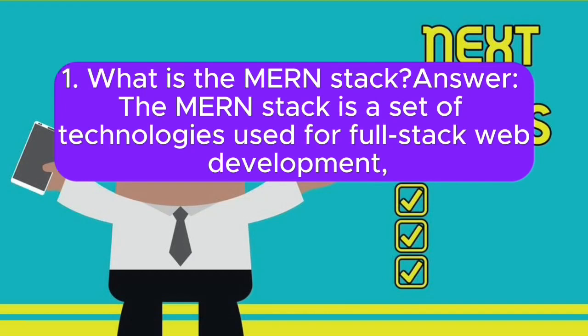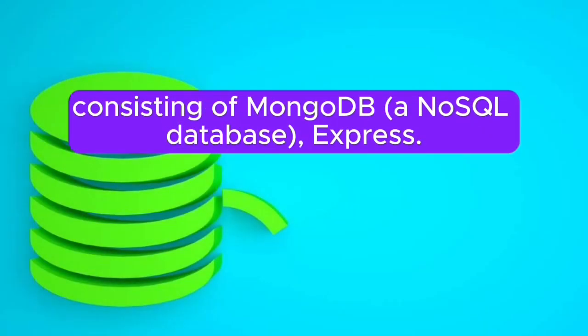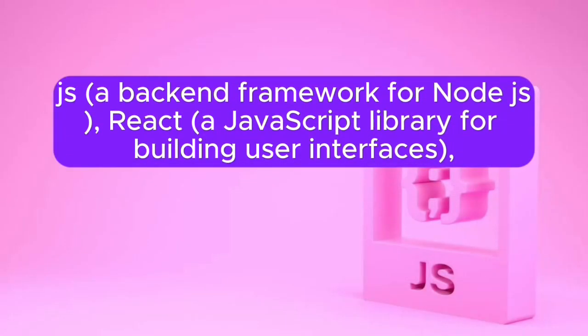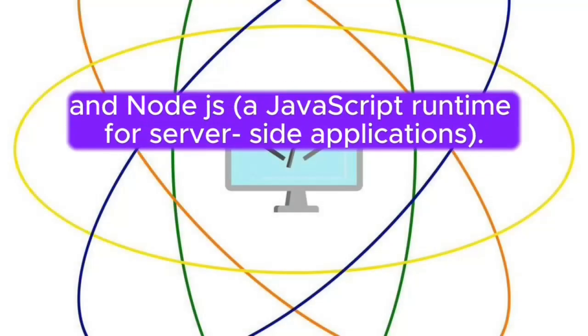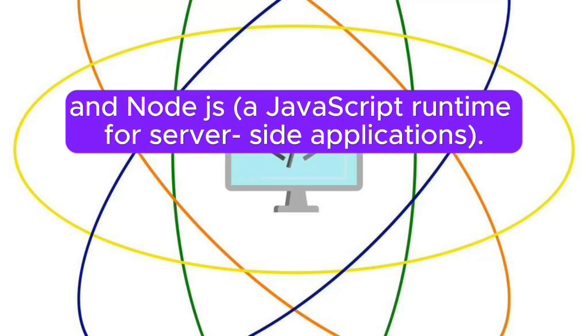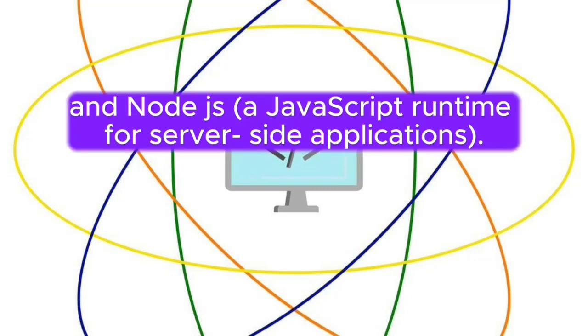1. What is the MERN stack? Answer: The MERN stack is a set of technologies used for full-stack web development, consisting of MongoDB, a NoSQL database; Express.js, a back-end framework for Node.js; React, a JavaScript library for building user interfaces; and Node.js, a JavaScript runtime for server-side applications.